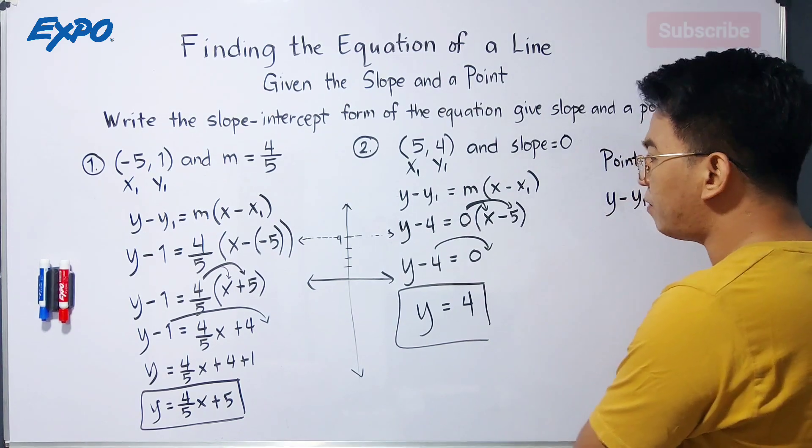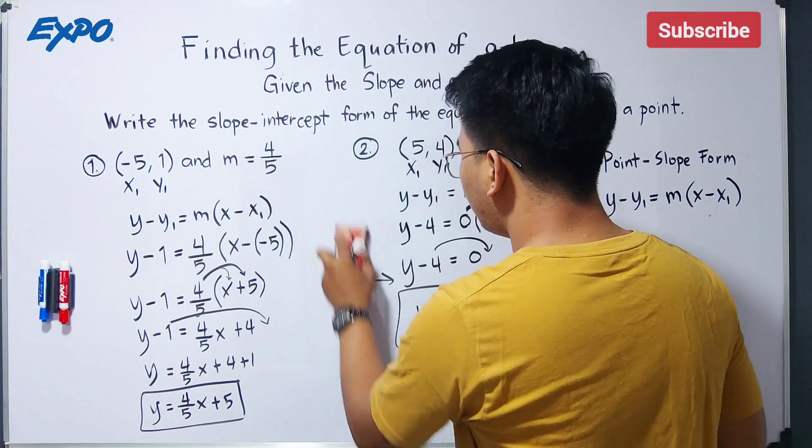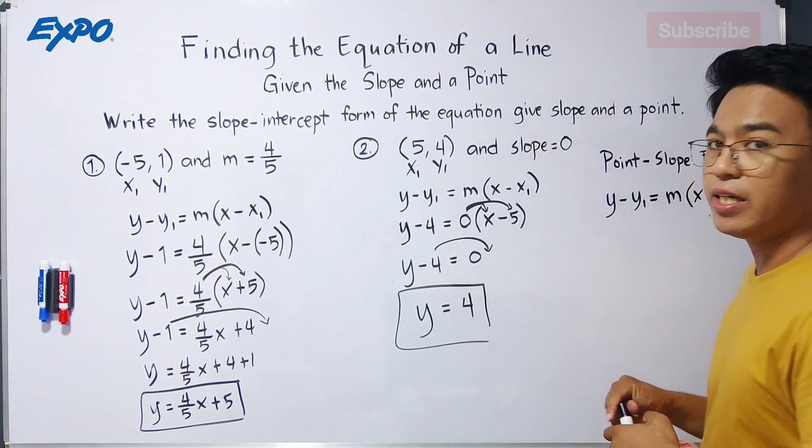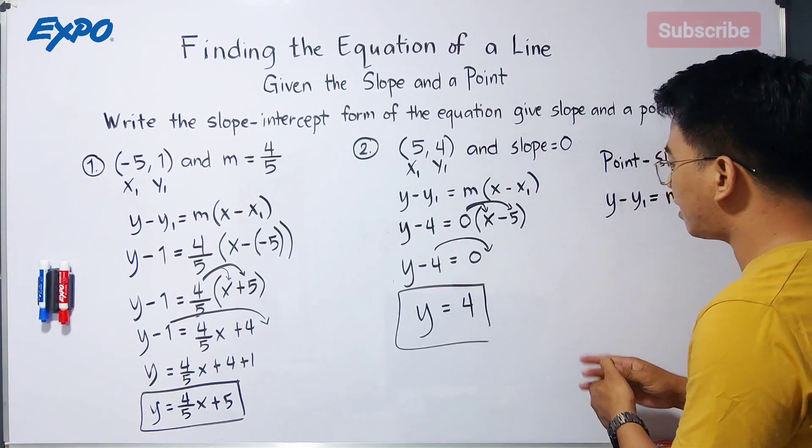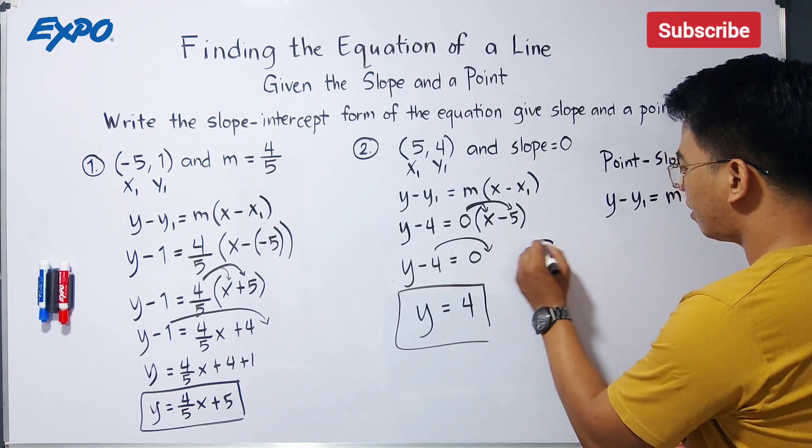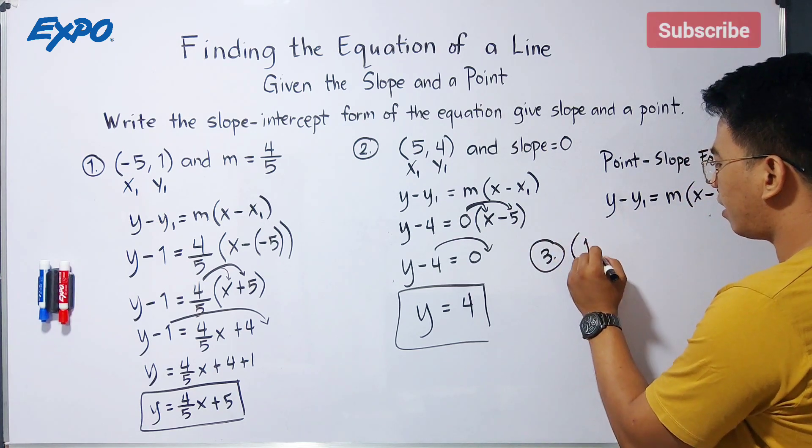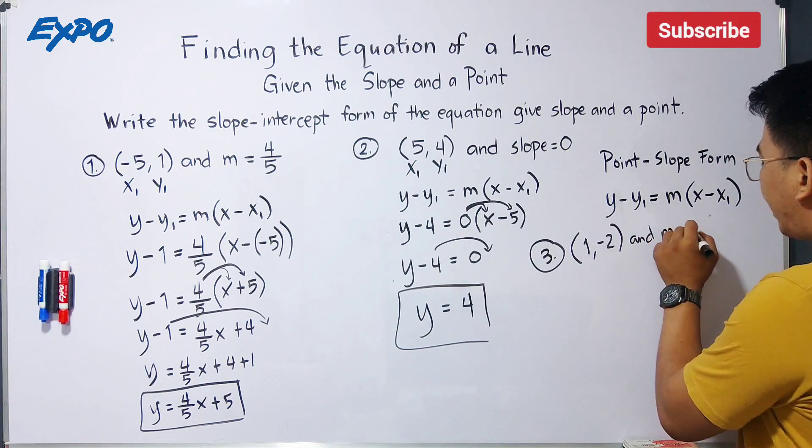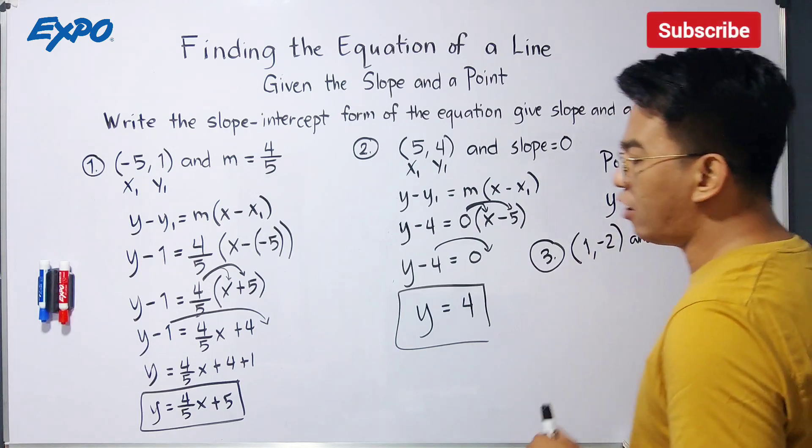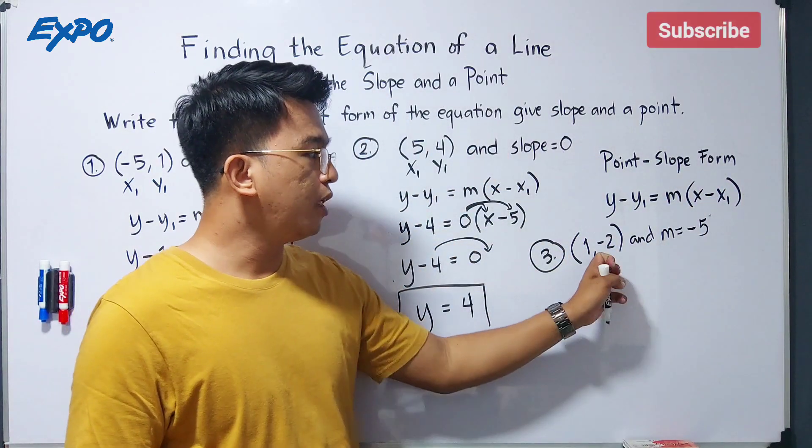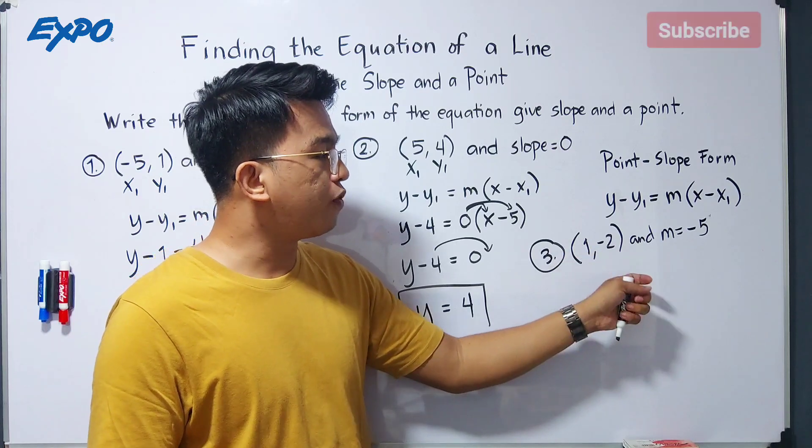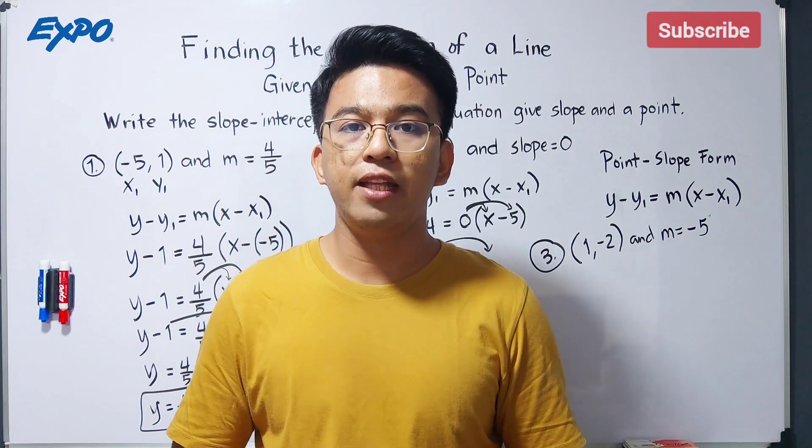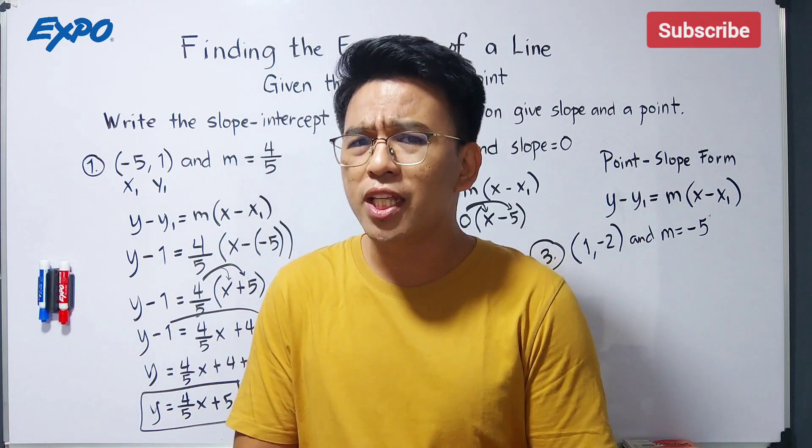So I hope you learned something from this video on how to find the equation of the line given the slope and the point. For your exercise, I will give you this example. Number 3. The given point is 1, negative 2. And the slope is equal to negative 5. I hope you'll get the correct answer. This is your point, 1 comma negative 2. And m is equal to negative 5. I hope you learned something from this video on how to find the equation of the line given a point and a slope.